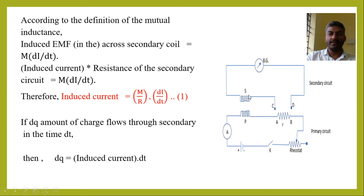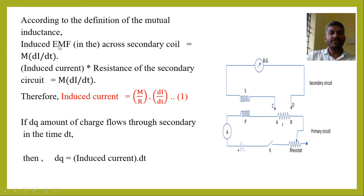Here I have coil P (primary coil) and coil S (secondary coil). Even though there is no direct connection to the primary circuit, by connecting C and D, the galvanometer shows deflection. That deflection is due to the induced EMF in the secondary circuit. The induced EMF across the secondary coil can be written as M × dI/dt.